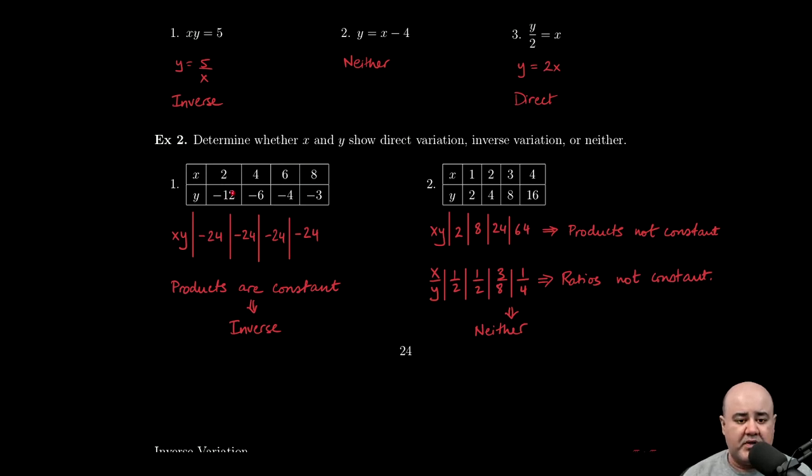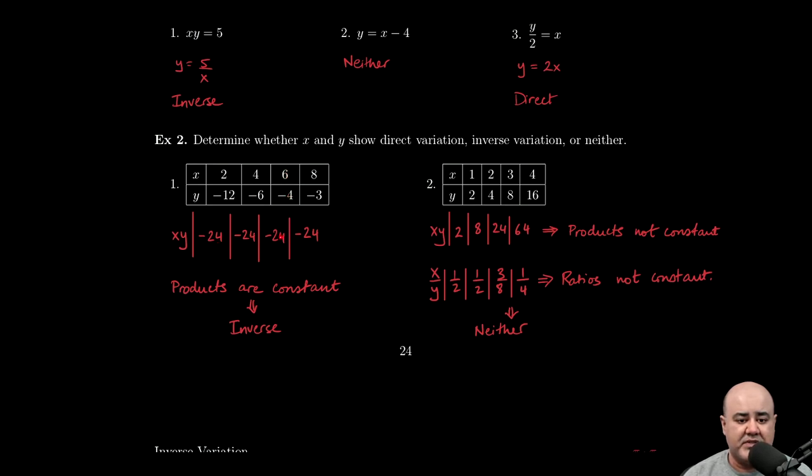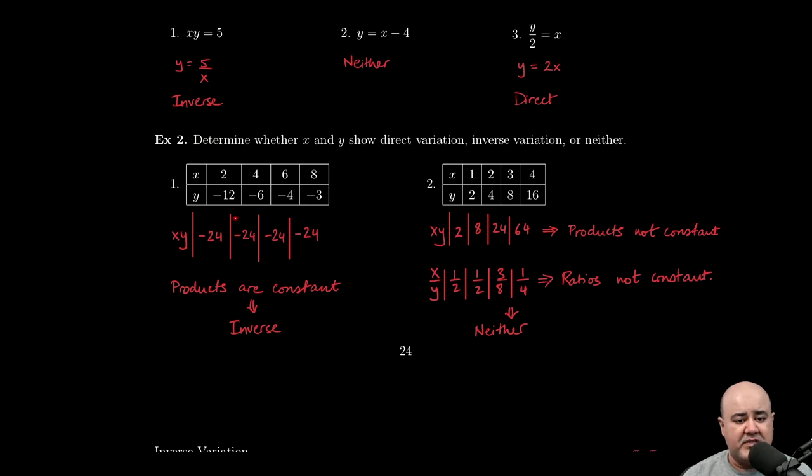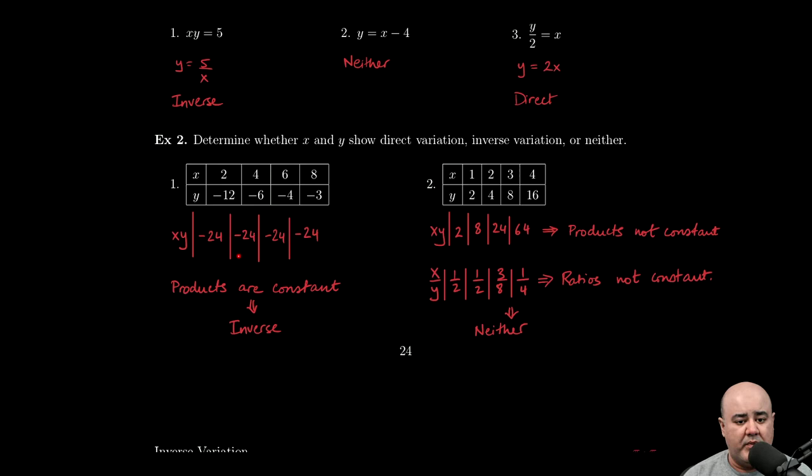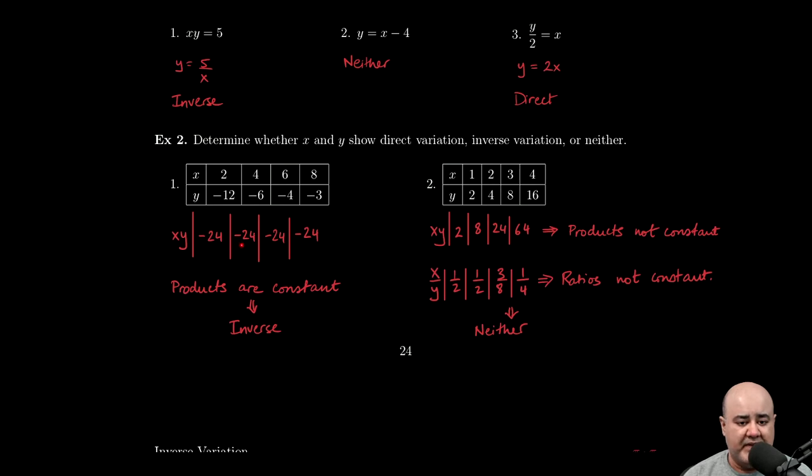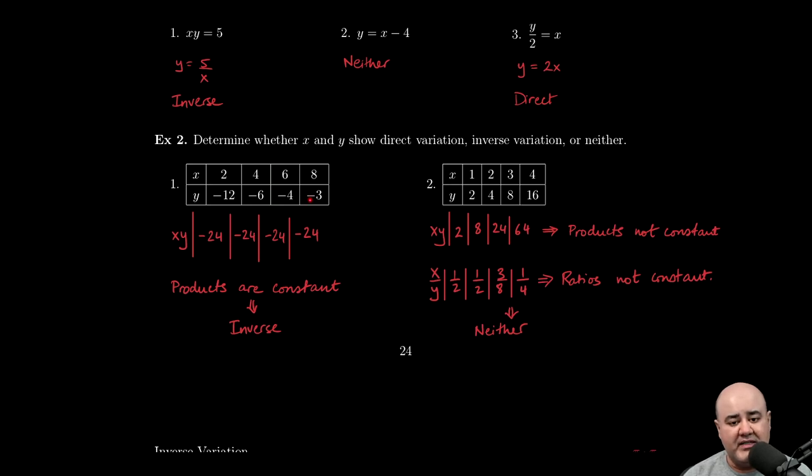So if we multiply these two x-coordinates, 2 times negative 12 yields negative 24, 4 times negative 6 is negative 24, 6 times negative 4 is negative 24 still, and then 8 times negative 3 is negative 24 as well. Now, be careful, because a common mistake here is that students will often just do the first two or maybe the first three computations and declare that they have found inverse variation because the products are constant.